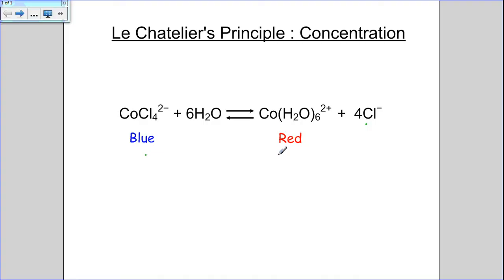So if we increase, for example, in this case, if we increase the concentration of H2O, then the reaction turns red, which shows that the forward reaction is favored. And if we increase the concentration of the Cl- ions, we see that the reaction turns blue, which shows that the reverse reaction is favored.